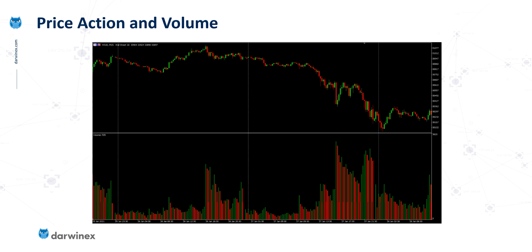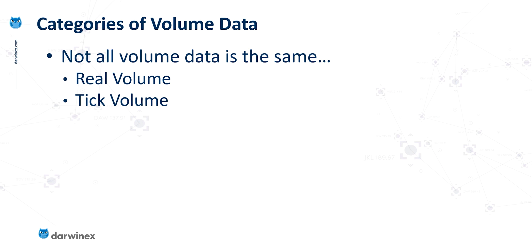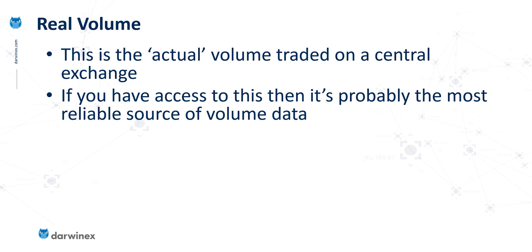The first thing you have to realize is that not all volume data is the same. We have two primary categories: the first is real volume, and the second is tick volume. Real volume gives you the actual volume that was traded for a particular asset on a central exchange. So for example, if you're trading futures, which DarwinX now supports, these tend to get traded on a central exchange. And so if you have access to this, then this is almost certainly the most reliable source of volume data.